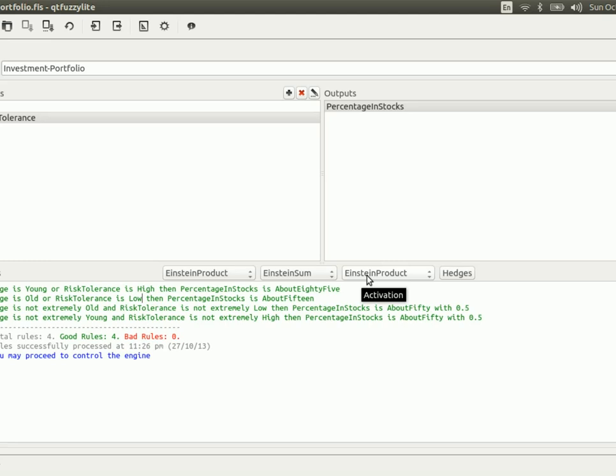In FuzzyLite, you are currently enforced, as of version 3.1, you are enforced to select both of them, the t-norm and s-norm, even if you do not have a connective in your rules. However, that will change in version 4.